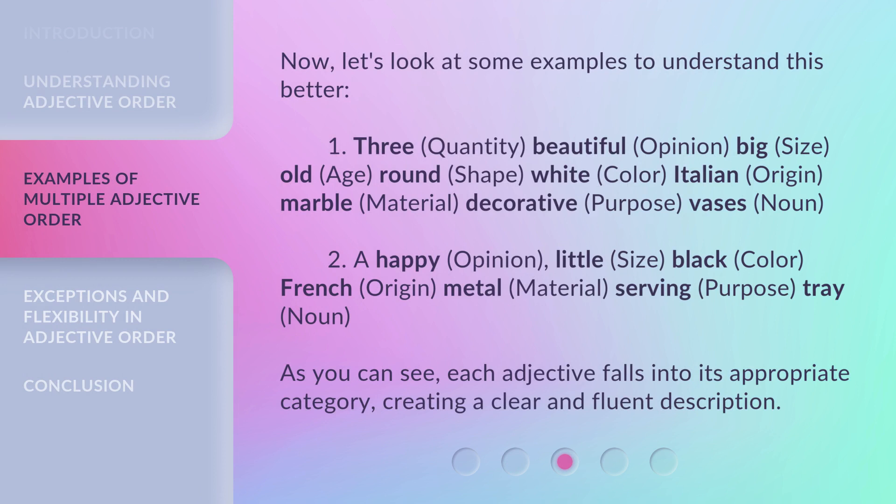Now, let's look at some examples to understand this better. Example 1: Three (quantity), beautiful (opinion), big (size), old (age), round (shape), white (color), Italian (origin), marble (material), decorative (purpose) — vases (noun).